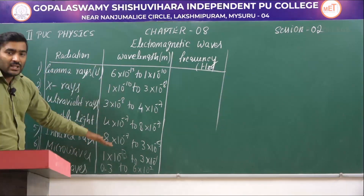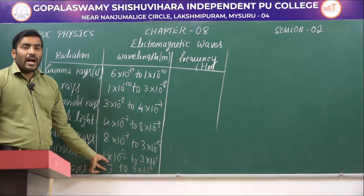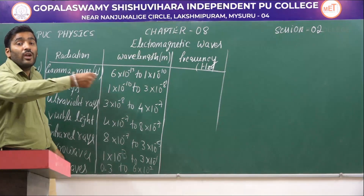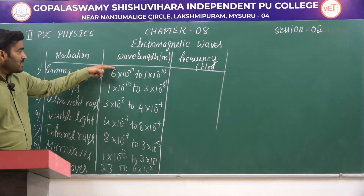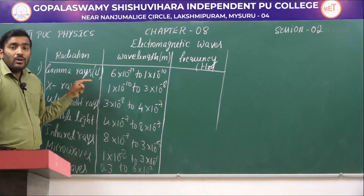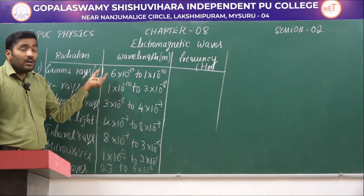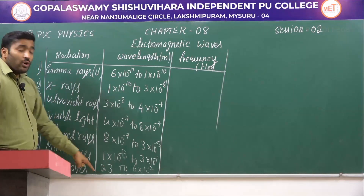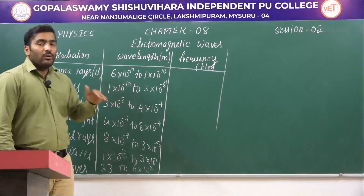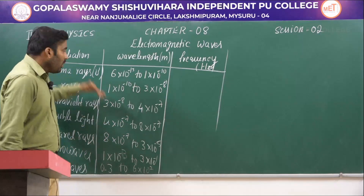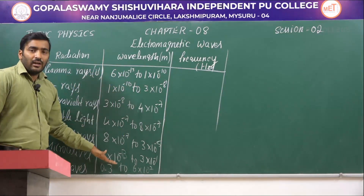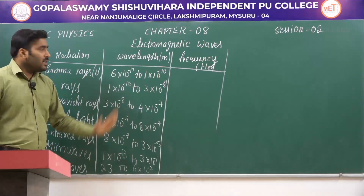Observing the wavelength ranges, radio waves have the longest wavelength and gamma rays have the shortest wavelength among these radiations. This is because we listed them in increasing order of wavelength. The frequency must be in decreasing order because wavelength and frequency are inversely proportional.